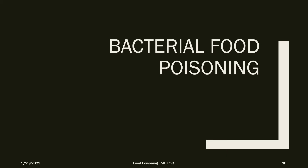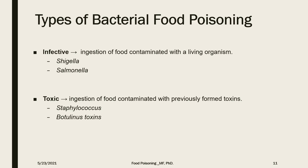The main topic of this lecture is bacterial food poisoning. There are two types: infective, which includes Shigella and Salmonella as examples and is defined as ingestion of food contaminated with a living organism; and toxic, which occurs when food is contaminated with previously formed toxins.